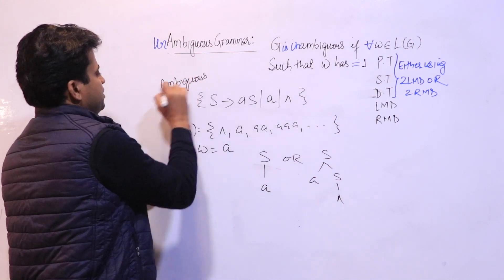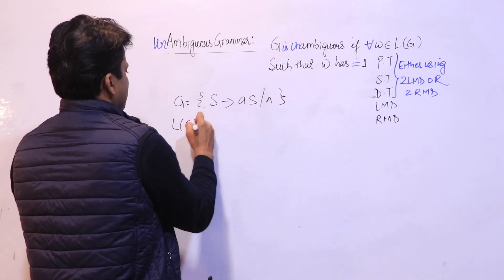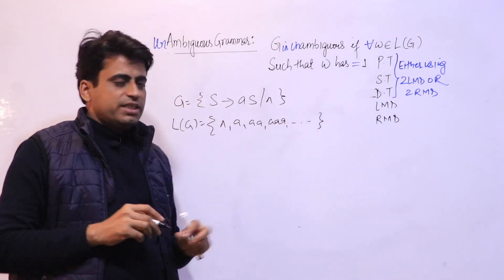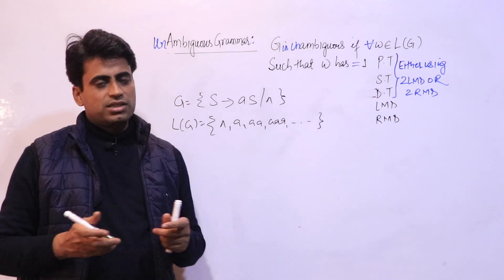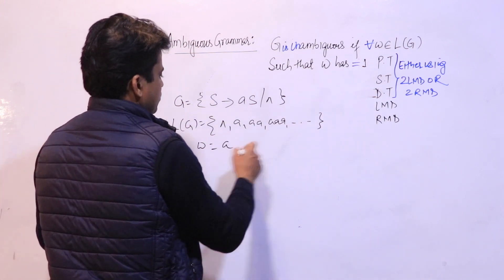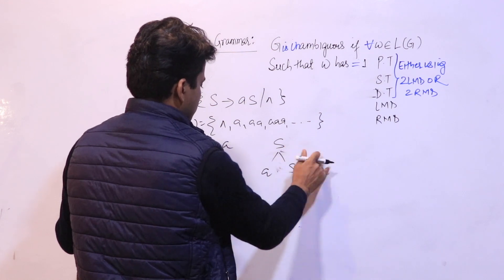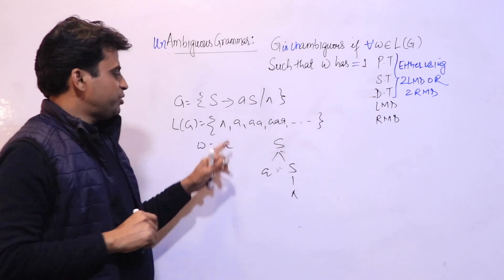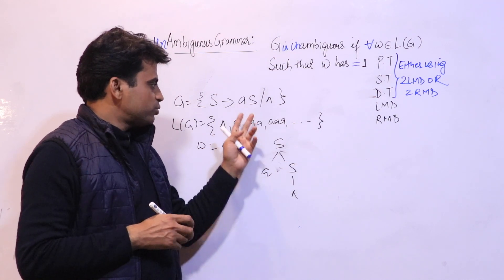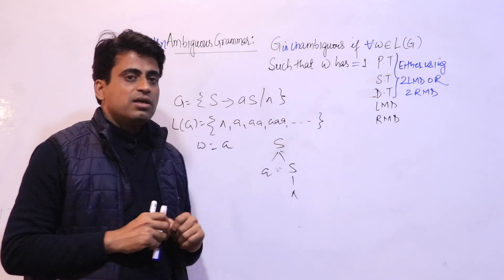Now consider another grammar. Its corresponding language has sentences: empty, a, aa, aaa, and so on. For any single string, we check whether more than one parse tree is being constructed using 2 LMDs or 2 RMDs. For w = a, there is only a single parse tree. For double a also, only a single parse tree. There is no string in this language for which more than one parse tree exists. So this grammar is unambiguous grammar.